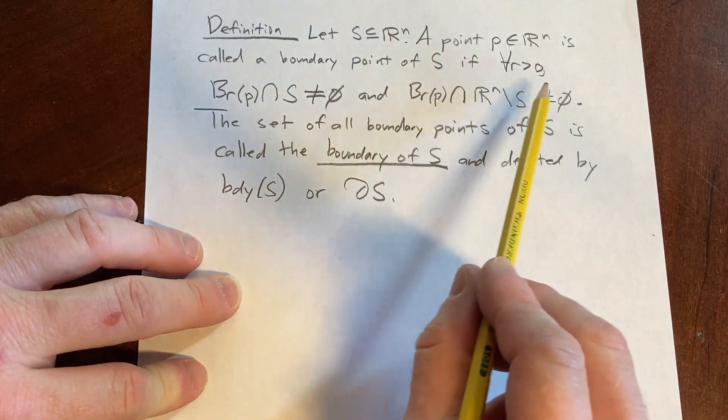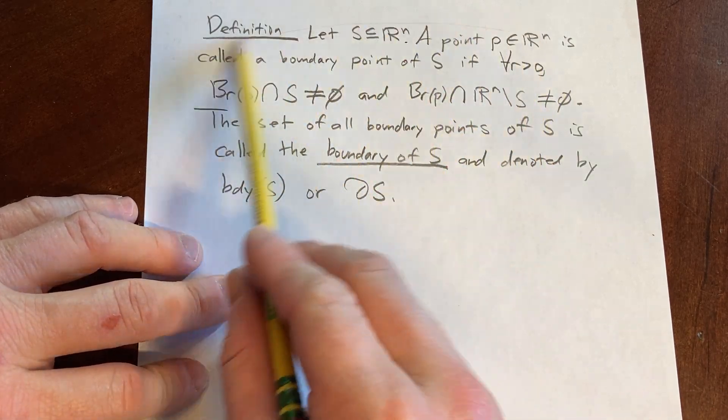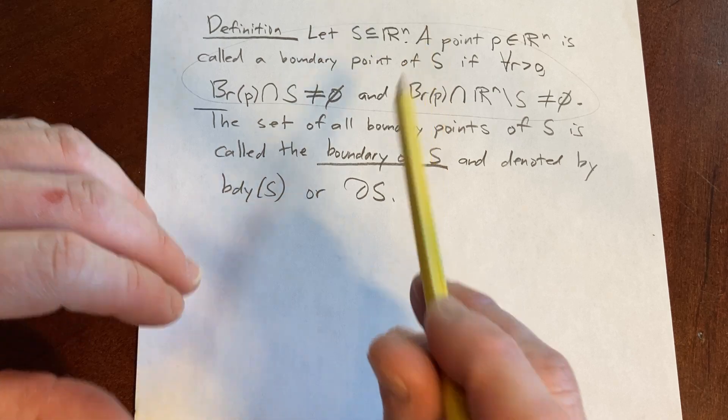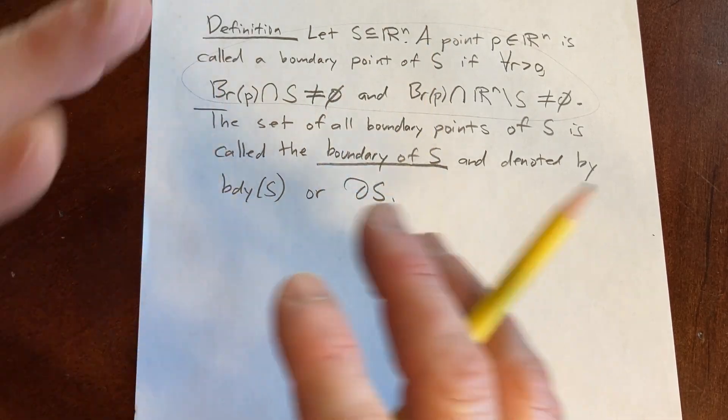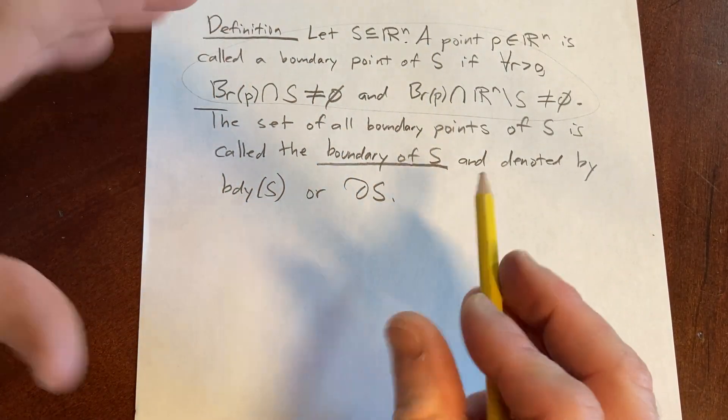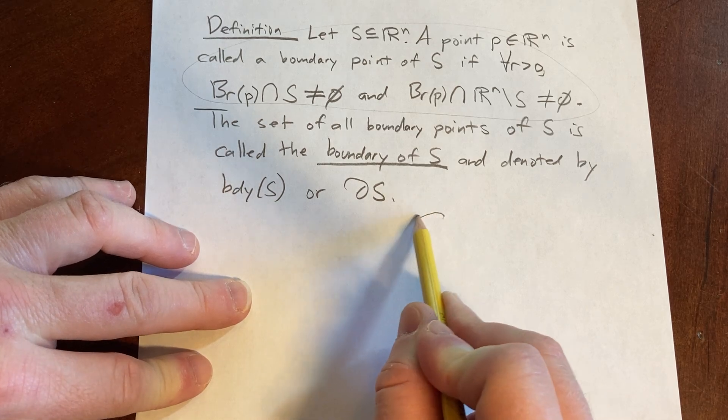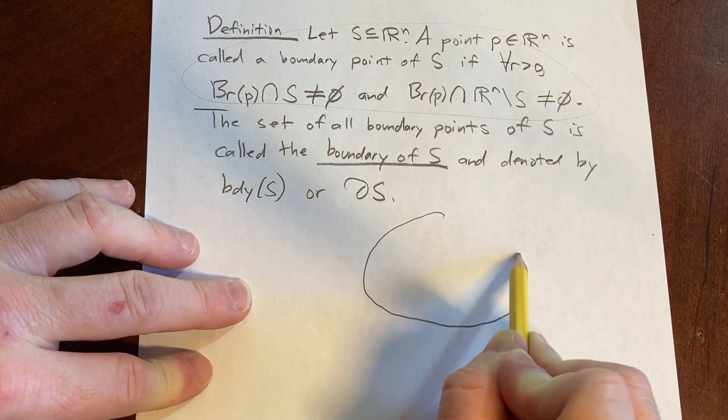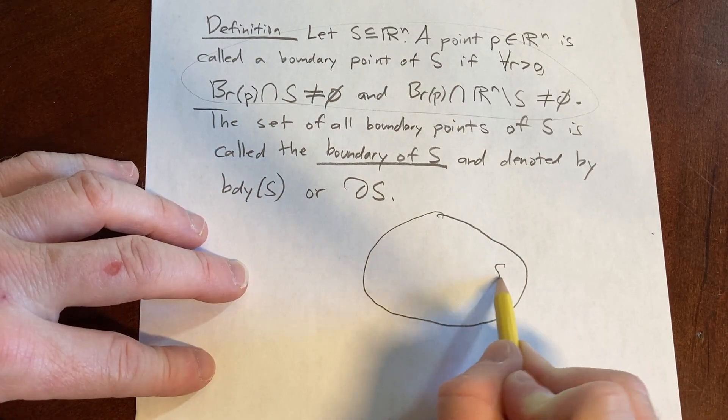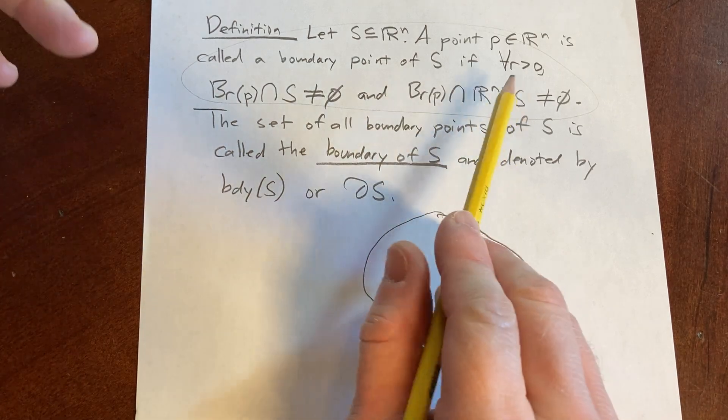So let's try to rationalize this definition intuitively, and we can do that by just pretending for a moment that instead of living in N dimensions, we're living in 2. So let's pretend that this is our set S.